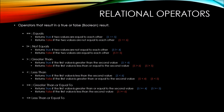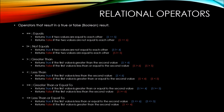Finally, the less than or equal to relational operator returns true if the first value is less than or equal to the second value. So 5 less than or equal to 6 would return true, and so would 5 less than or equal to 5. The less than or equal to relational operator returns false if the first value is greater than the second value, so 5 less than or equal to 4 would return false.